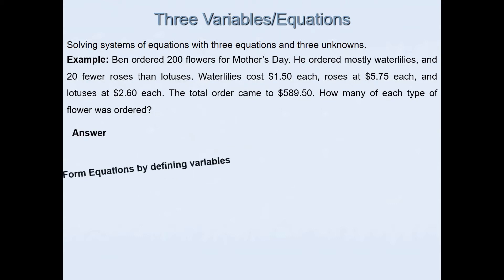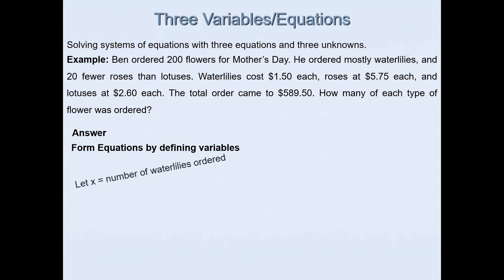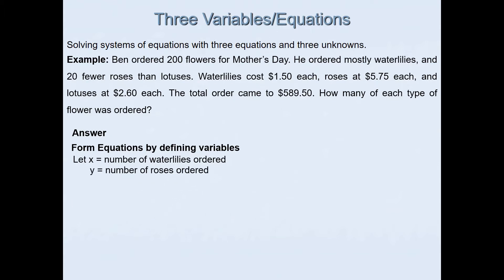We need to form equations by defining the variables. Let x be the number of water lilies, y be the number of roses, and z be the number of lotuses Ben ordered. Ben ordered 200 flowers in total, so the sum of all three varieties equals 200. That gives us our first equation: x + y + z = 200.